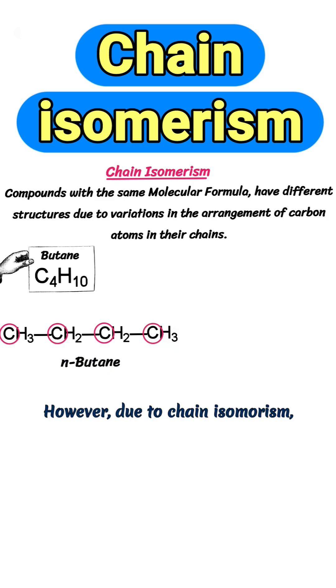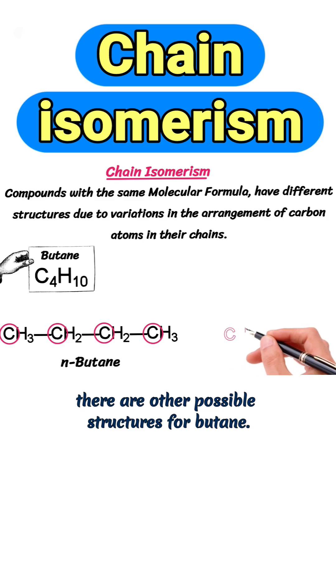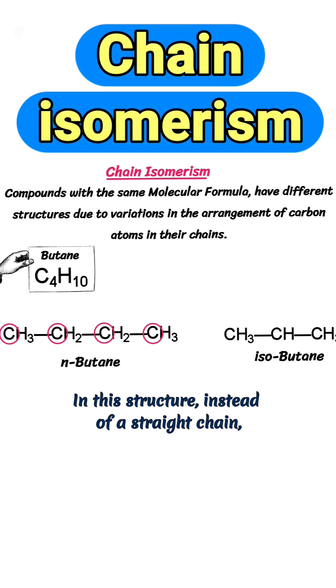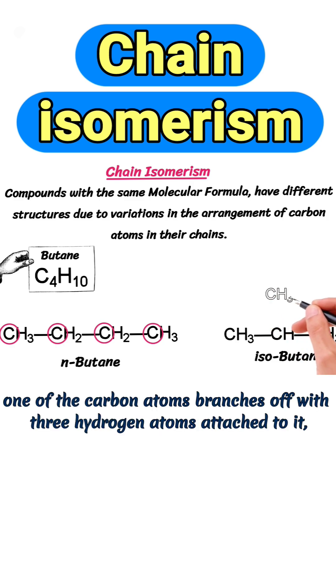However, due to chain isomerism, there are other possible structures for butane. Another isomer of butane is called isobutane. In this structure, instead of a straight chain, one of the carbon atoms branches off with 3 hydrogen atoms attached to it.